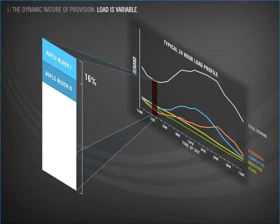The code specifies that AUFLS blocks must comprise two blocks of at least 16% of load at all times. The code is only concerned with that minimum level — there is no upper limit. So most AUFLS providers look at their load profile and make sure they have 16% at their lowest demand period, say 3am.